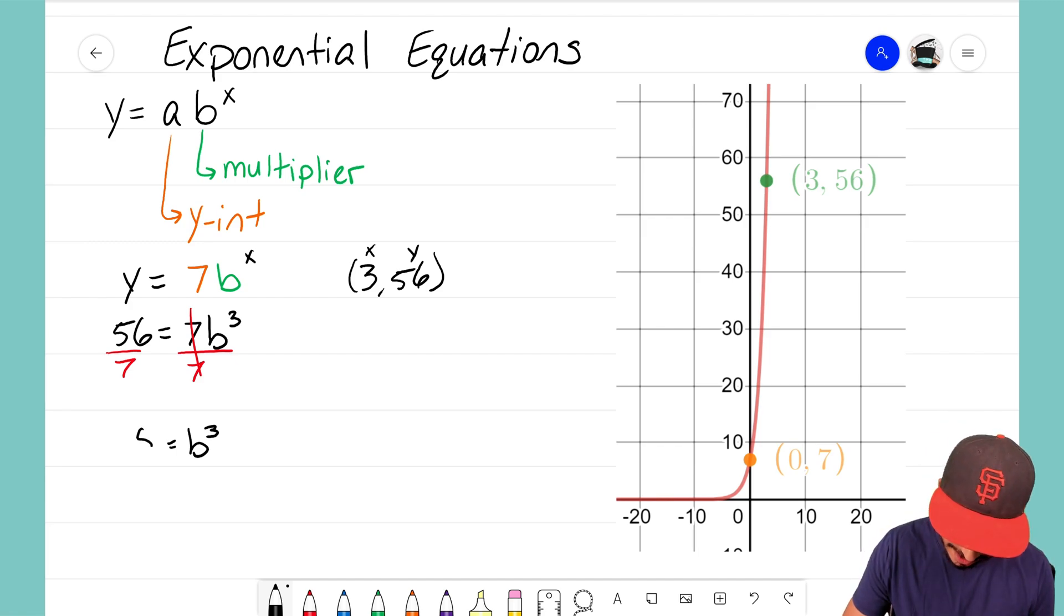Now we're so close. I almost have B by itself but right now we have B to the third power. I just want B by itself. Well to get B by itself I need to take away that three there, that cube, and to do that I just need to take the cube root of both sides.